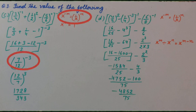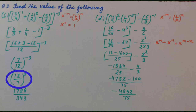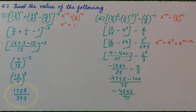So we will make it positive. It is 12 upon 7, whole raise to the power 3. And when we solve it, it is 1728 upon 343.